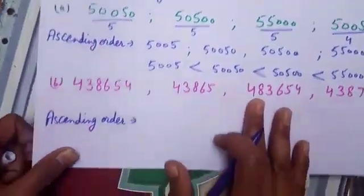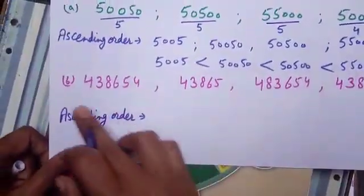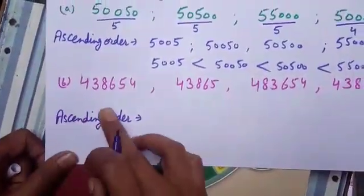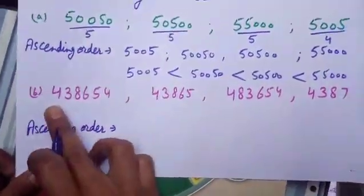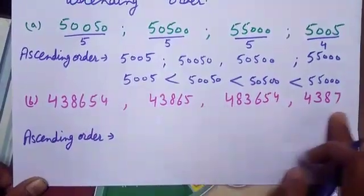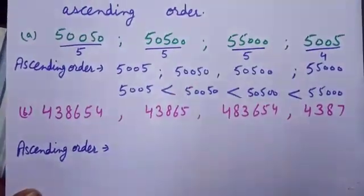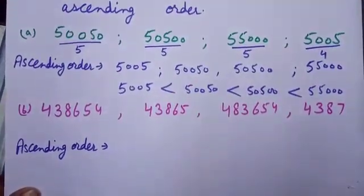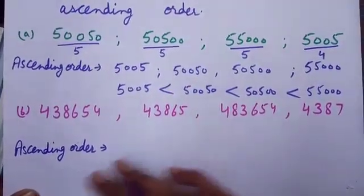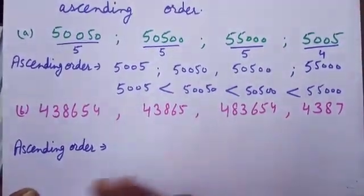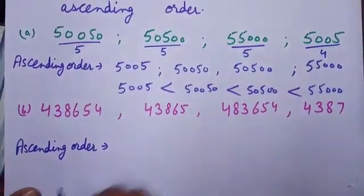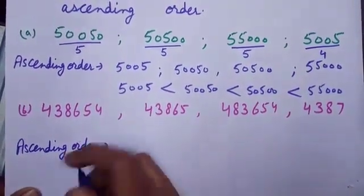Now let's take one more example. Come to part B. There are some numerals and I want to arrange them in ascending order — that means smallest to the greatest. Firstly, I will count the number of digits.